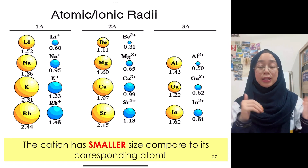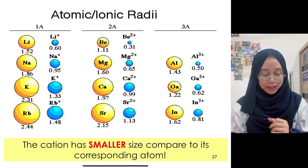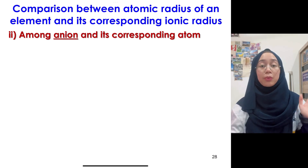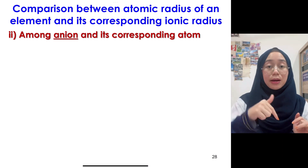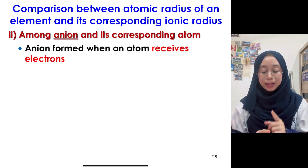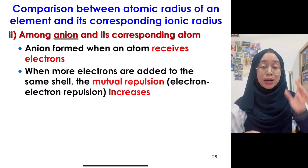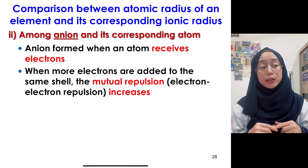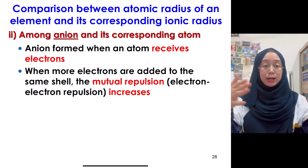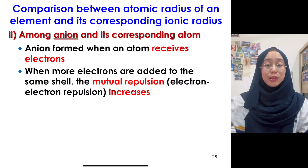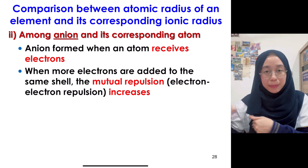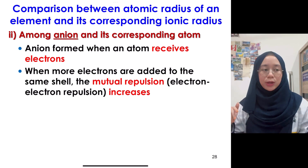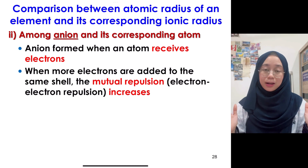Now let's look at the comparison between an anion and its corresponding atom. For cations we removed electrons, but for anions we gain electrons, added into the same shell. An anion forms when an atom receives electrons. When more electrons are added to the same shell, mutual repulsion between electrons increases. These electrons repel each other, which weakens the attraction forces between the nucleus and the electrons.